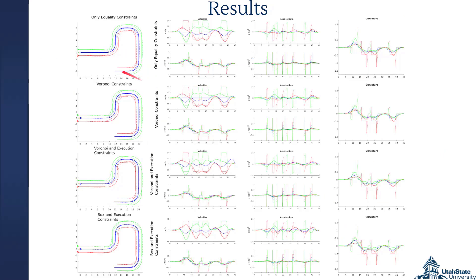We studied four cases in simulation for a formation of three agents. The first case has only dynamic equality constraints; the second adds safe region constraints; the third adds execution constraints on the states; and the fourth tightens the safe region to a box constraint. In all cases, the resulting paths (dotted lines) are smoother than the original trajectories (solid lines). This smoothing reduces control effort. The last two cases are guaranteed to be collision-free and executable. These results show our method allows efficient generation of smooth, executable, and safe trajectories for follower agents in a formation.